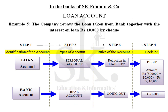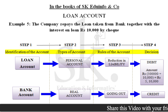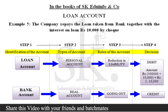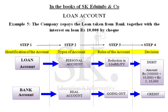Example five: the company repays the loan taken from bank together with interest of rupees ten thousand by cheque. Here we assume the interest on loan was not paid earlier and has already been transferred to the loan account via the journal entry in example three. Therefore, the total amount due is the loan of five lakhs plus interest of ten thousand, totalling five lakh ten thousand. Loan account is debited as there is a reduction in liability, and bank account is credited since payment is made by cheque.